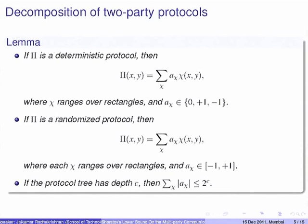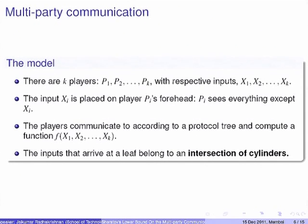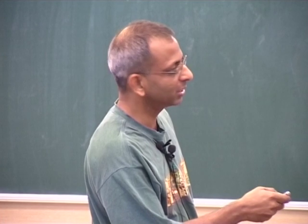This is all in the two-party setting. Next I'll tell you about the multi-party setting. Instead of two players, you have k players — p1 through pk. P1 has input x1, p2 has input x2, and pk has input xk. But there is something strange: player 1's input is actually stuck on his forehead, meaning he cannot see his own input but everyone else can.